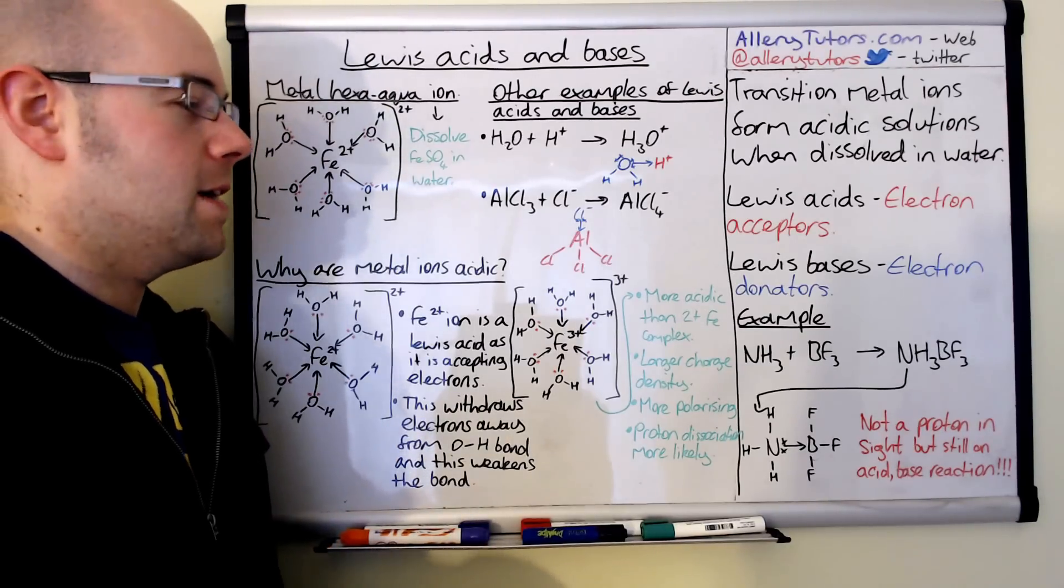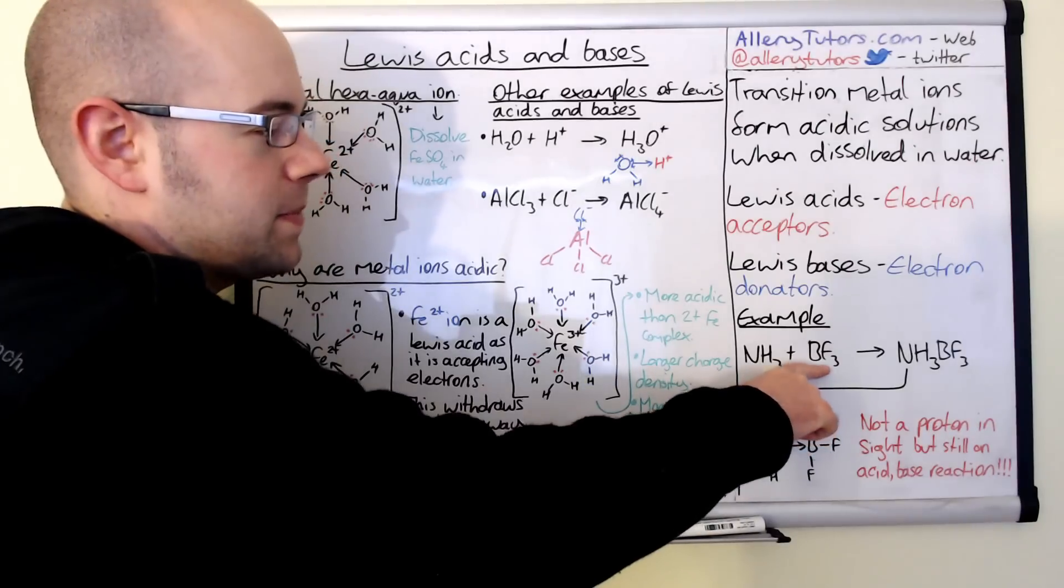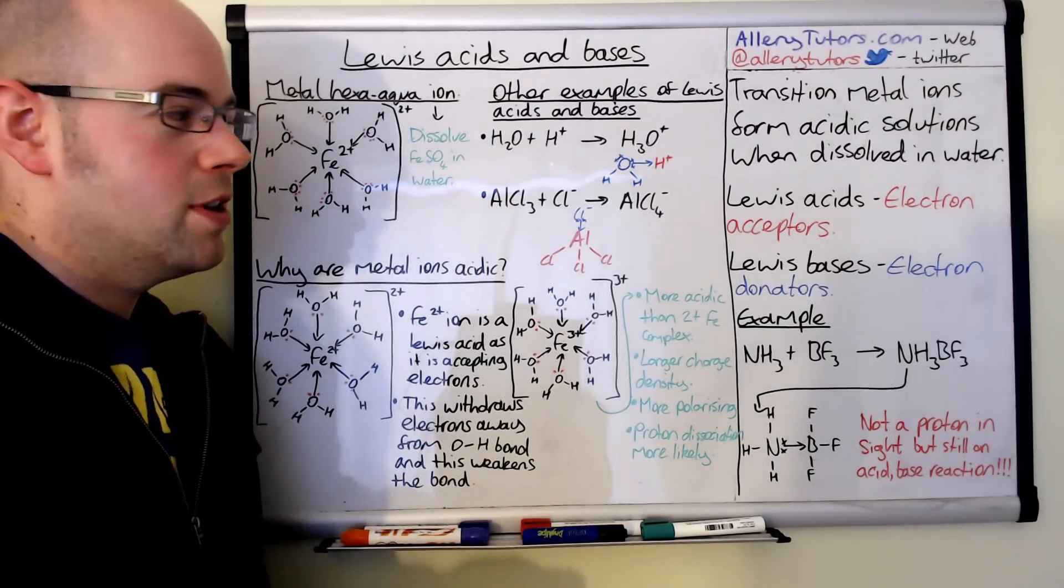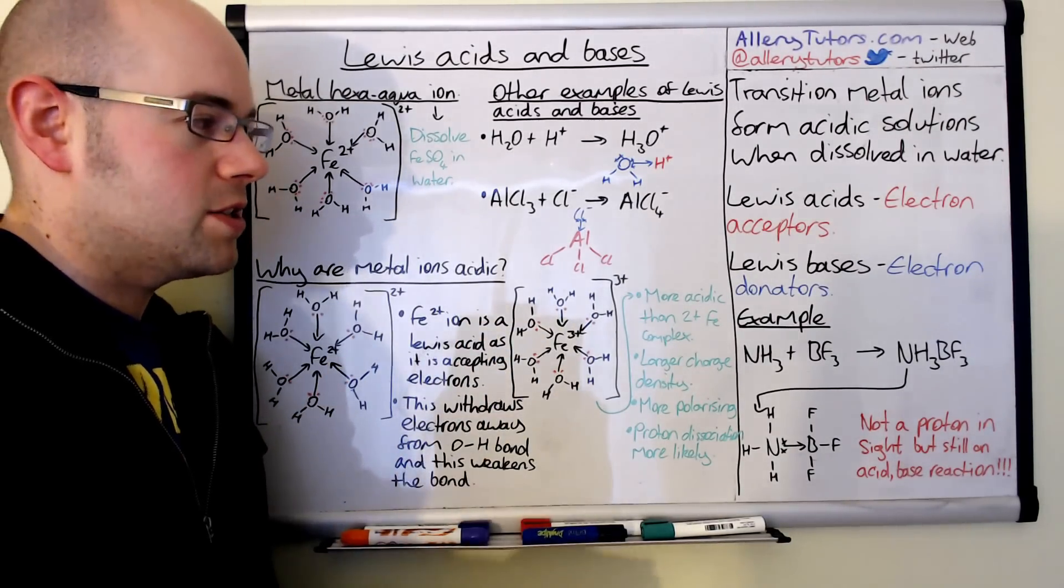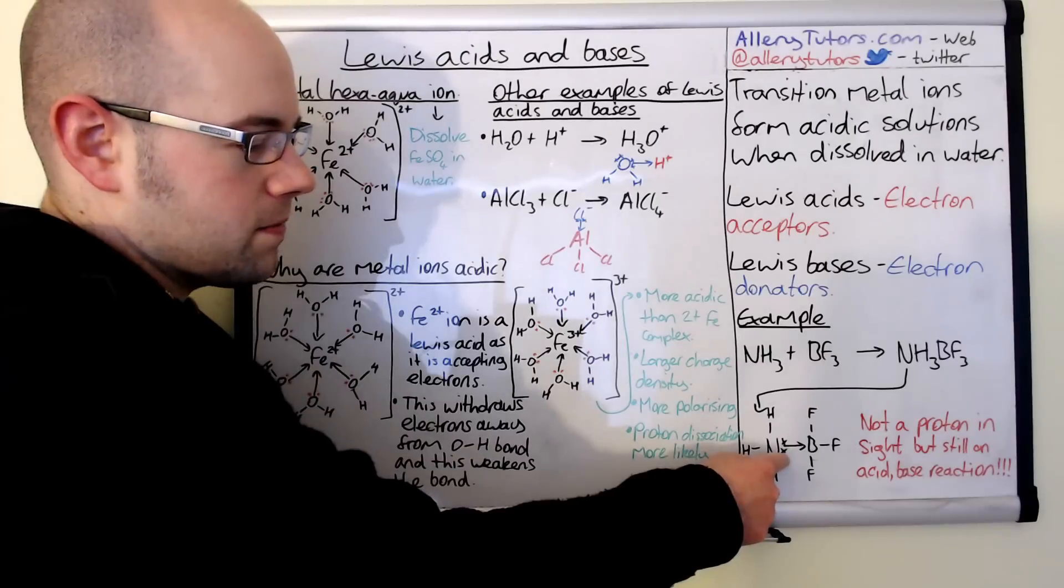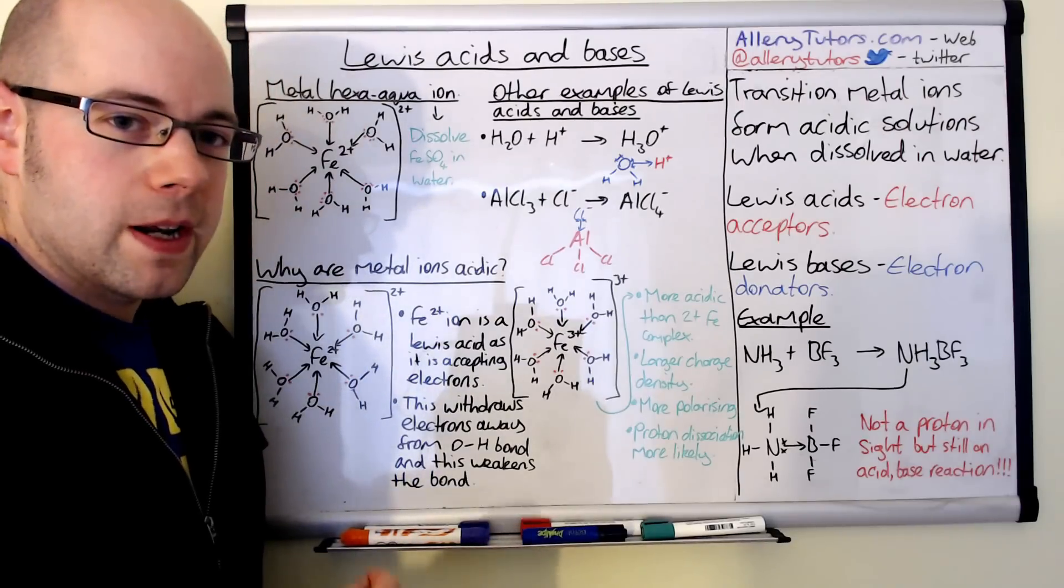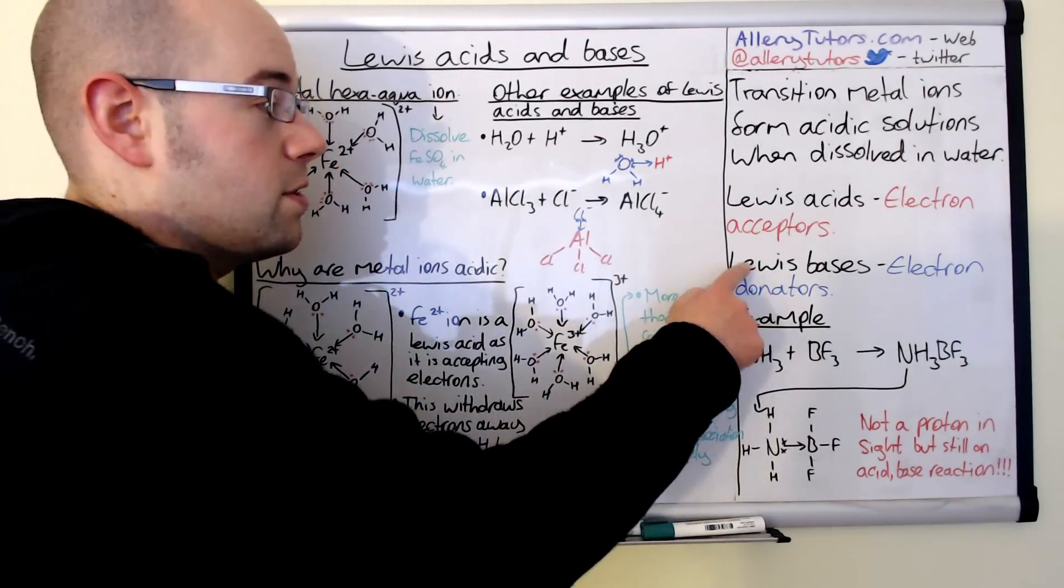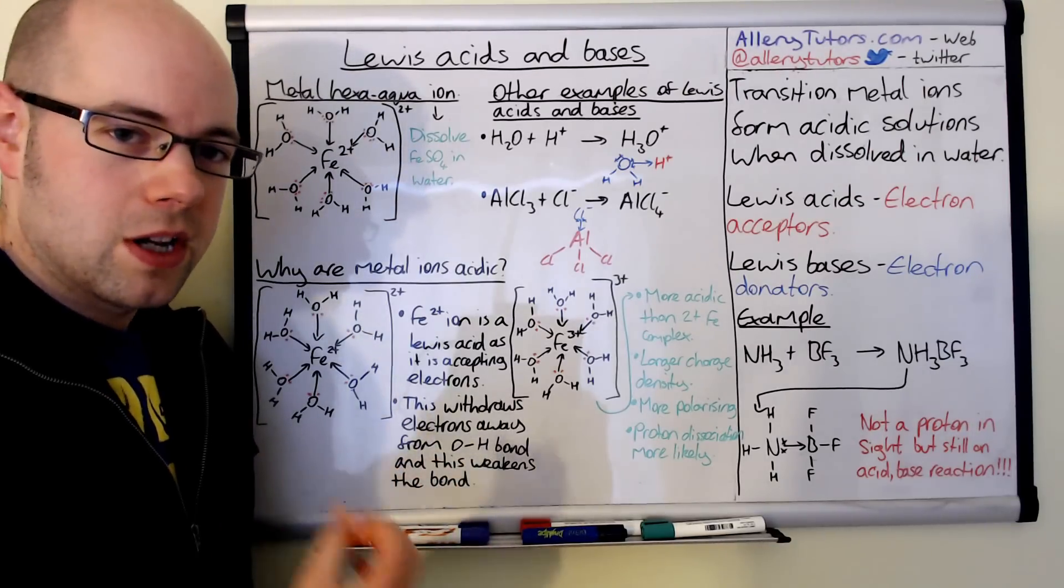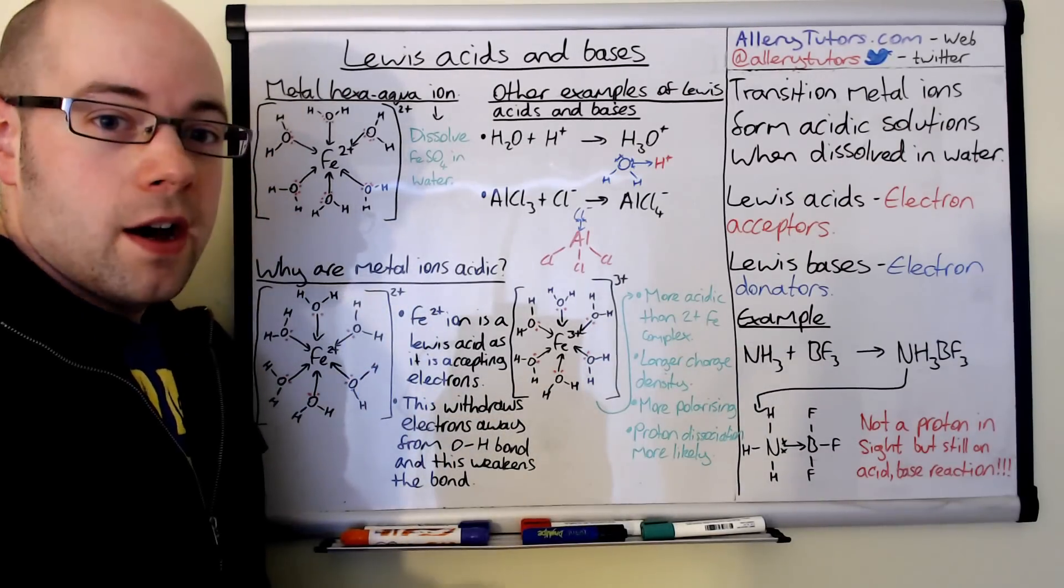An example of this is ammonia and boron trifluoride. You can see here that these two react to form a salt. This is an acid-base reaction but there's no proton being donated or accepted. What's actually happening is the ammonia is effectively donating a lone pair of electrons to the boron here, and this is a dative covalent bond. Because the ammonia is donating electrons, it's acting as a Lewis base, and the BF3 is acting as an electron acceptor, so therefore it's a Lewis acid.